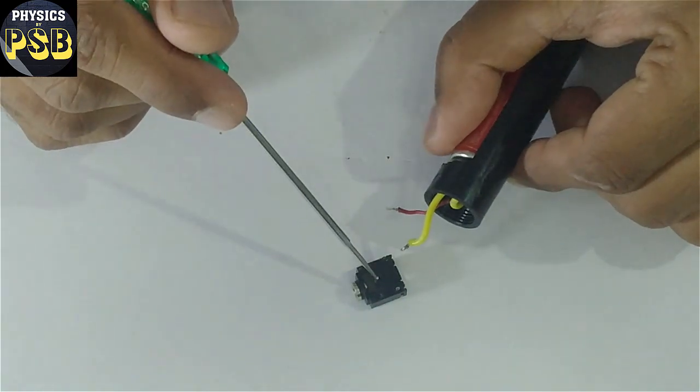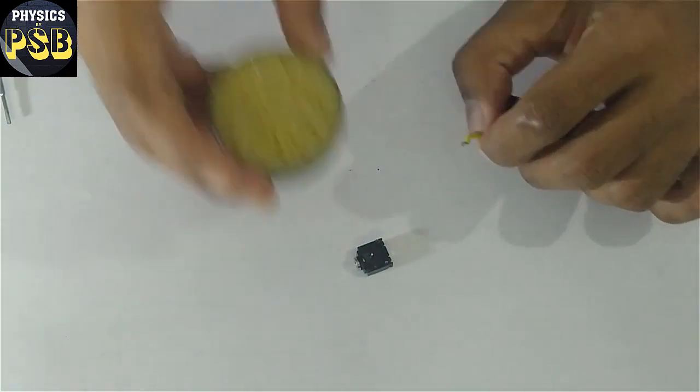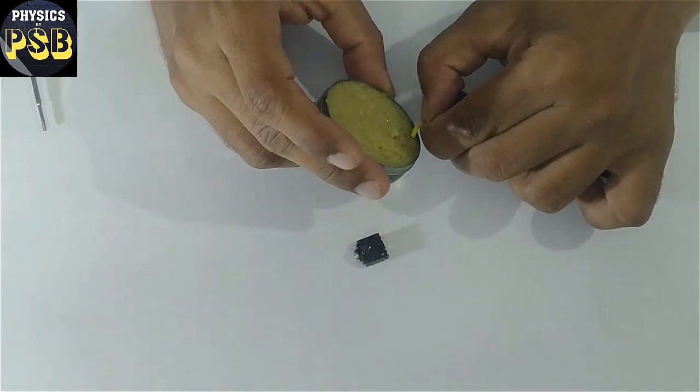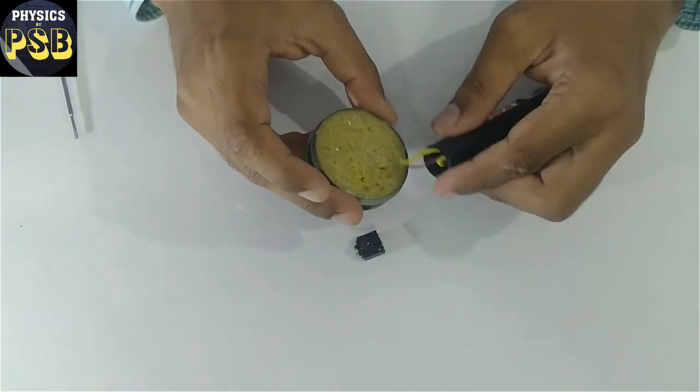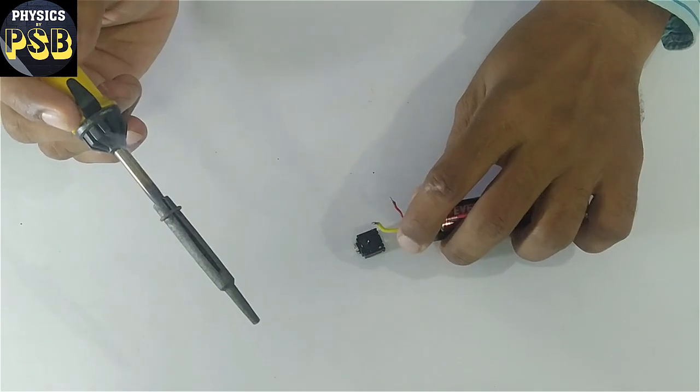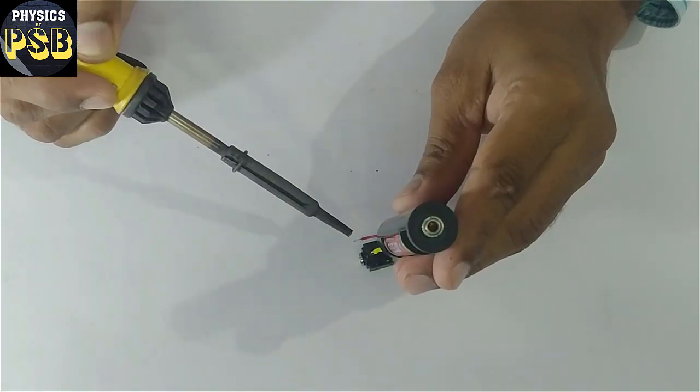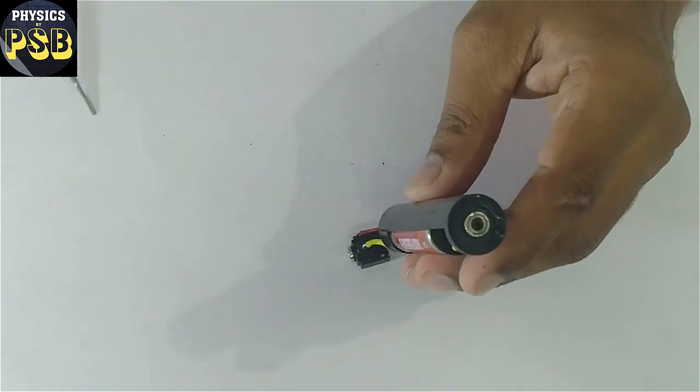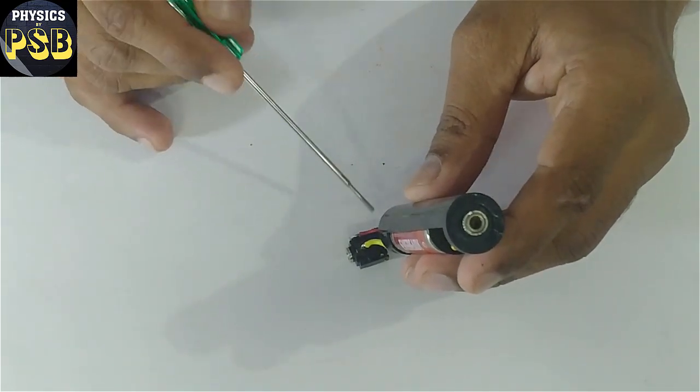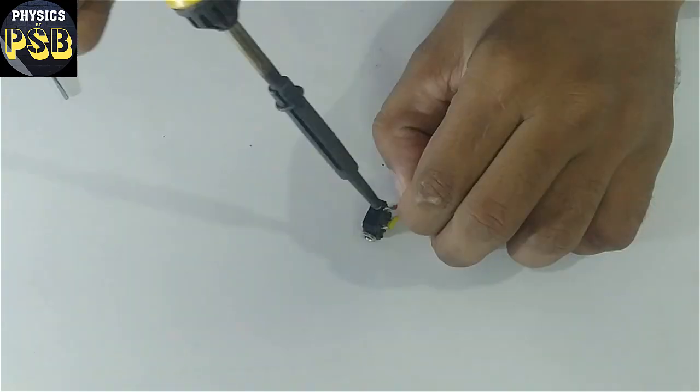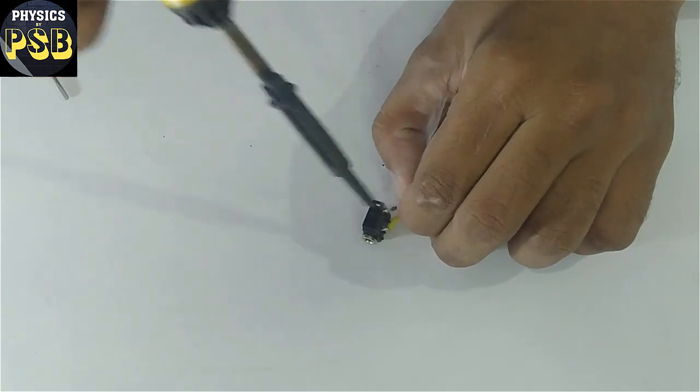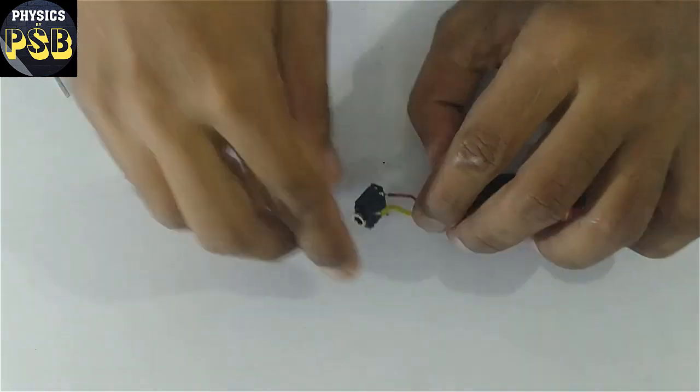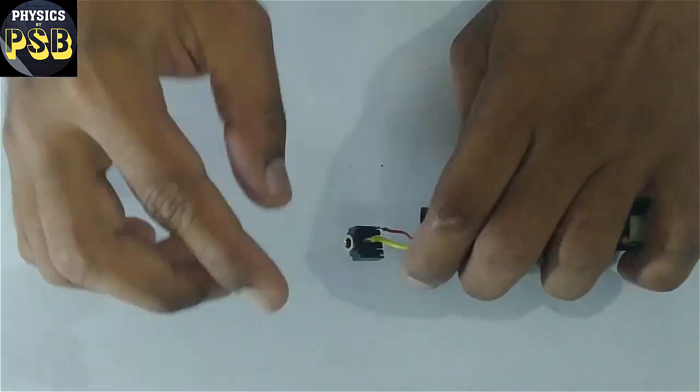Before soldering I apply some soldering paste. Let's do the connection. This wire has got soldered. Now I will solder the red wire to this pin. Both the solders are done. Now it's almost ready to be used.